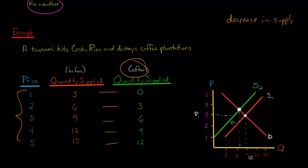So now Q2 is the new quantity in equilibrium. And P2 is the new price. So what we see is that this decrease in supply has actually increased the price. So the equilibrium price has increased and the equilibrium quantity has gone down.